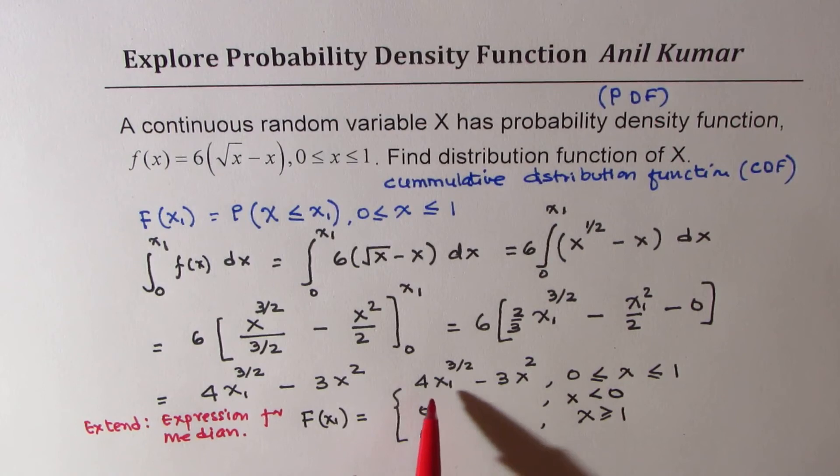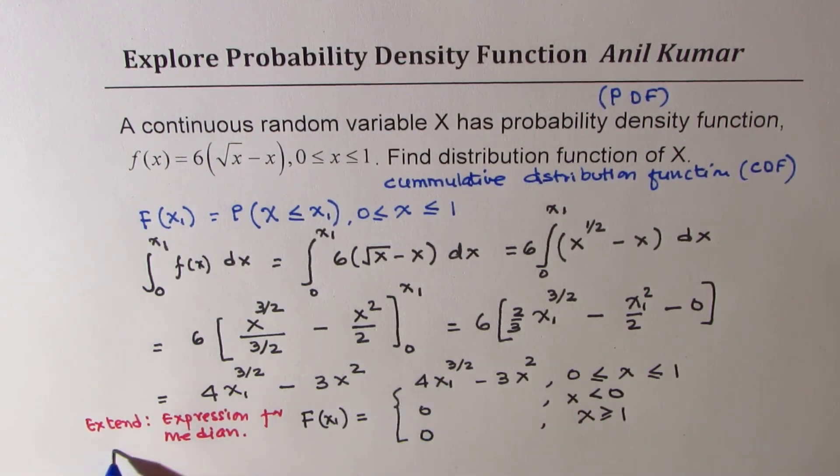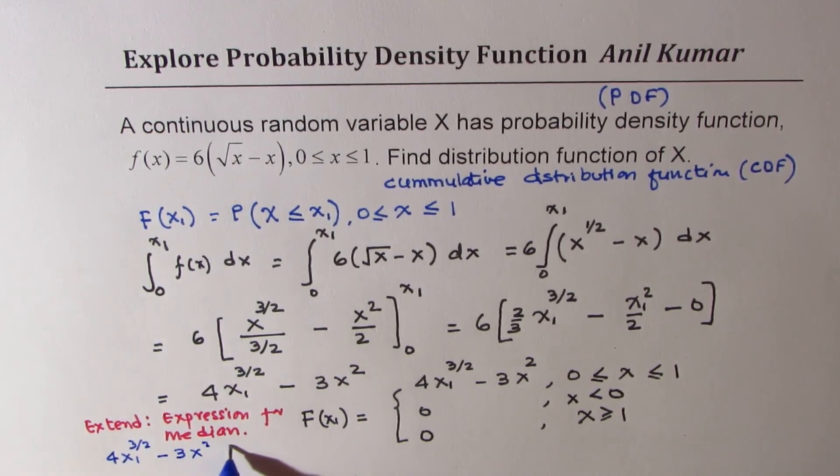In that case, we equate this distribution function to half. You can simplify and find the solution. So it will be 4 x1 to the power of 3 by 2, minus 3 x squared, equals to half. Since that is 50%, the probability should be 0.5 or half.